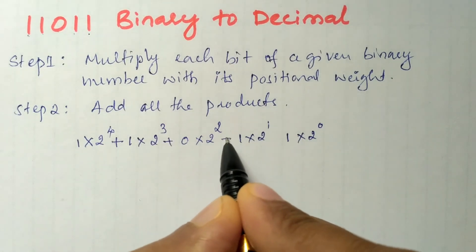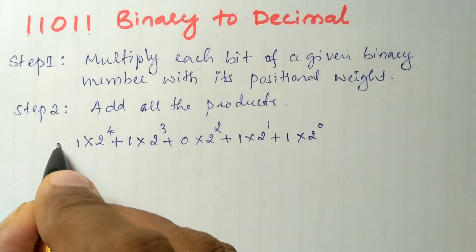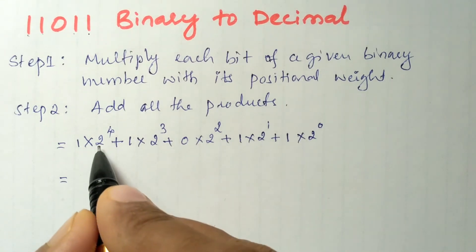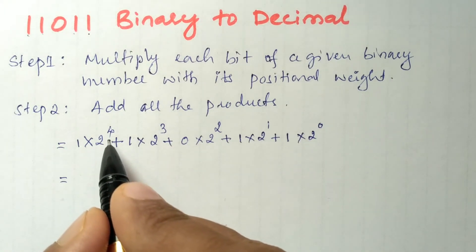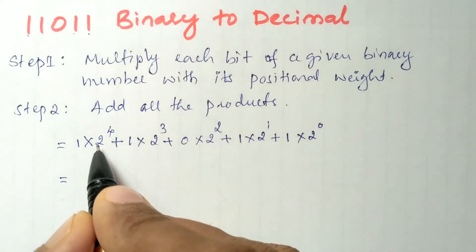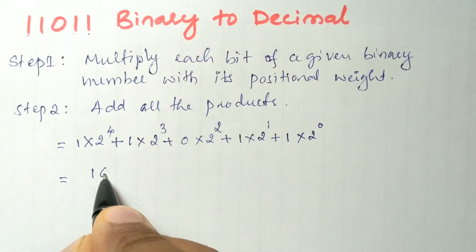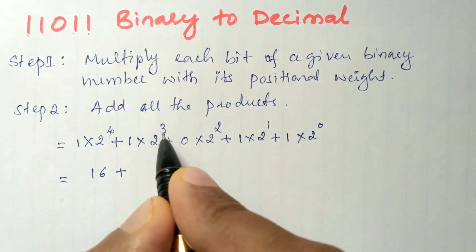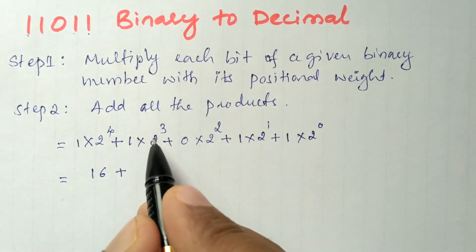Now let us further simplify. 2^4: 2 is to be multiplied 4 times, so 16. Plus 2^3: we have to multiply 2 thrice, so 8. 0×anything is 0.